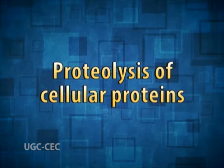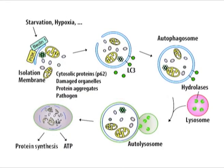Proteolysis of cellular proteins: The other major pathway of protein degradation in eukaryotic cells involves the uptake of proteins by lysosomes. Lysosomes contain an array of digestive enzymes including several proteases. The containment of proteases and other digestive enzymes within lysosomes prevents uncontrolled degradation of the contents of the cell. Therefore, in order to be degraded by lysosomal proteolysis, cellular proteins must first be taken up by lysosomes.